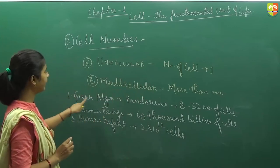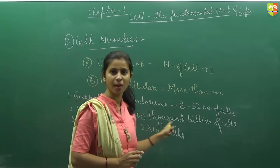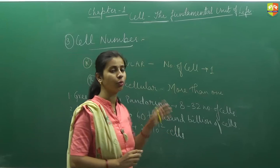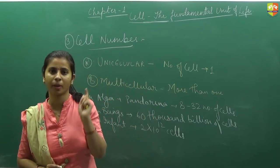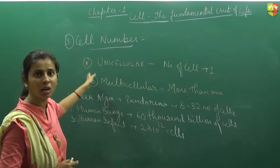So green alga, Pandorina, 8 to 32 number of cells. Human beings, 60,000 billion of cells. And human infant have 2 into 10 to the power 12 number of cells. So this is the category of number of the cell.